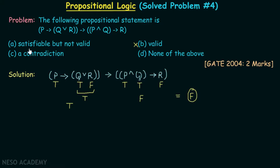Now let's try to make it satisfiable. If we are successful in making this compound proposition true for at least one truth value combination of p, q, and r, then we can say it is satisfiable and not a contradiction. Let's try to make this compound proposition true. Let me rewrite it.